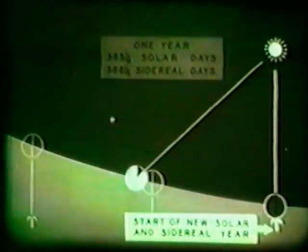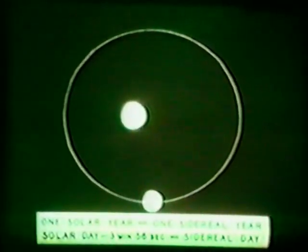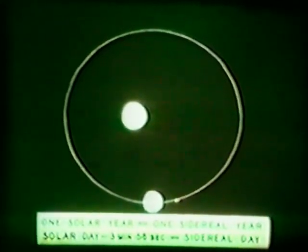There are therefore only 365 and one-quarter solar days in a year. The relation between solar days and sidereal days in a year can be established by remembering that the solar year extends over the same period of time as the sidereal year but has one less day. Therefore the days in a solar year must be a little longer — in fact, a solar day is 3 minutes and 56 seconds longer than a sidereal day. Consequently, solar hours, minutes, and seconds are proportionately longer than sidereal hours, minutes, and seconds.